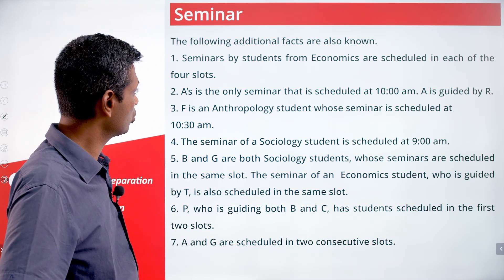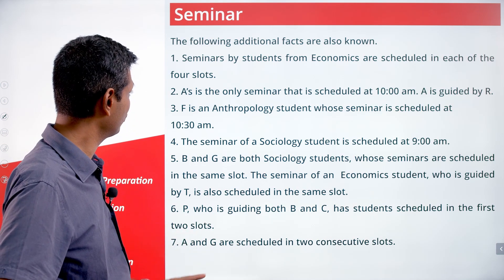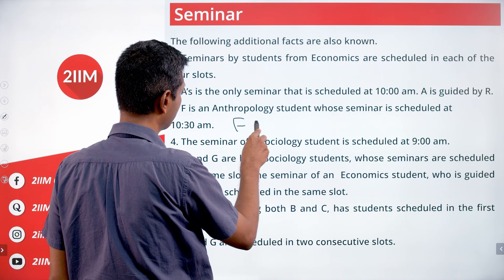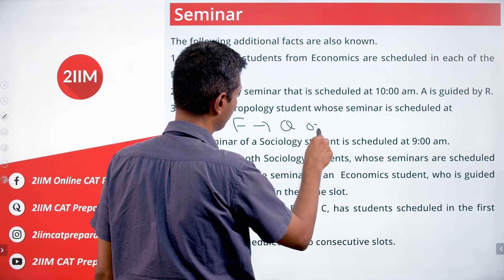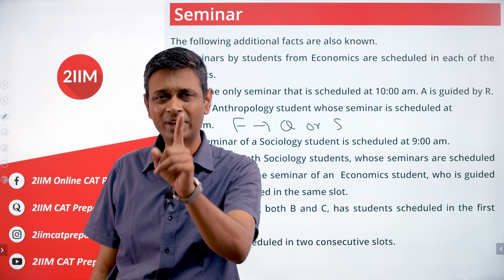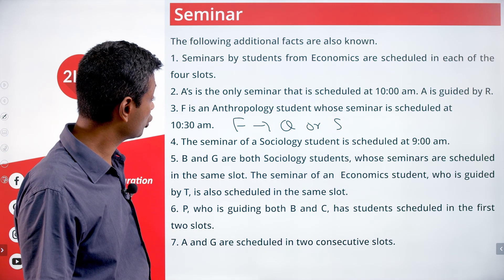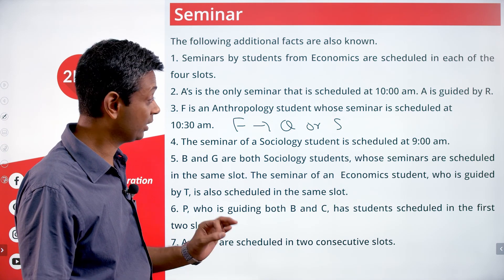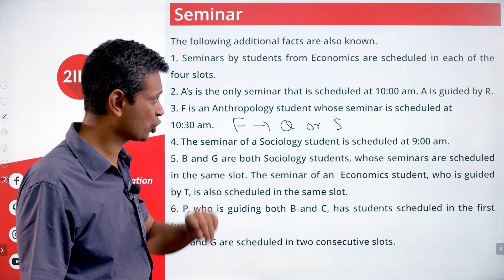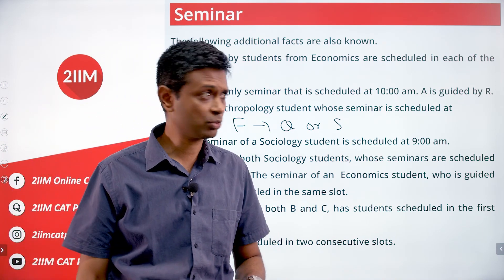F is an anthropology student whose seminar is scheduled at 10:30am — the last slot. F should be guided by Q or S, since they are the ones who have only one student each. P, R, and T each have two students. There is only one anthropology student, so it must be Q or S guiding F.